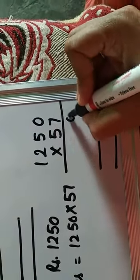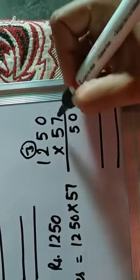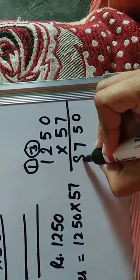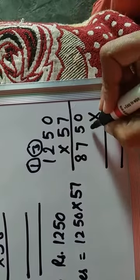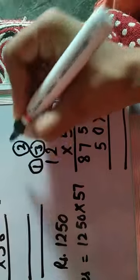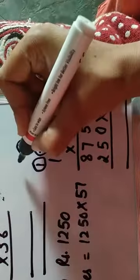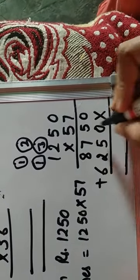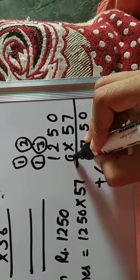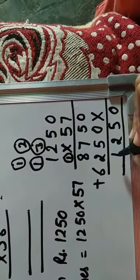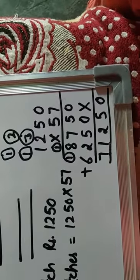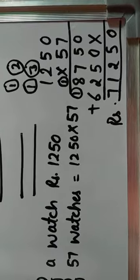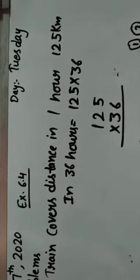7 times 0 is 0. 7 times 5 is 35, the 5, 3 carry. 7 times 2 is 14, 14 plus 3 is 17, the 7, 1 carry. 7 times 1 is 7, 7 plus 1 is 8. Now put here 1 cross. 5 times 0 is 0. 5 times 5 is 25, the 5, 2 carry. 5 times 2 is 10, 10 plus 2 is 12, the 2, 1 carry. 5 times 1 is 5, 5 plus 1 is 6. Now do plus: 0 here as it is, 5 plus 0 is 5, 7 plus 5 is 12, the 2, 1 carry. 8 plus 1 is 9, 9 plus 2 is 11, the 1, 1 carry. 6 plus 1 is 7. So what will be the cost of 57 watches? 71,250 rupees.